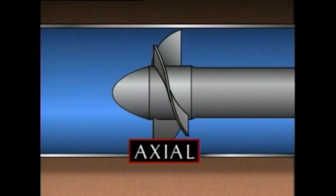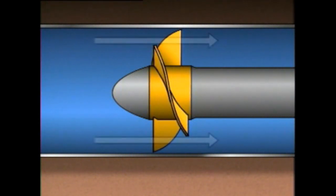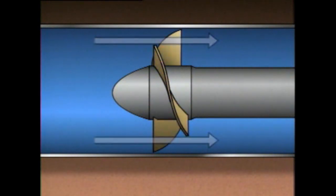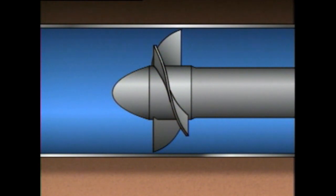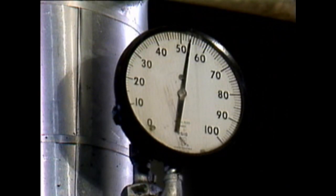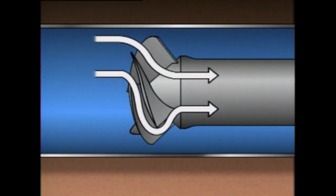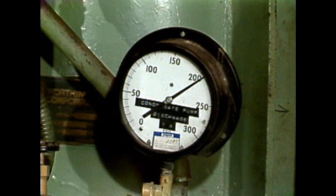In centrifugal pumps with an axial flow design, the impeller moves the liquid through the pump along a path parallel to the pump shaft. The liquid is moved mainly by the propeller action of the impeller's vanes, using only a small amount of centrifugal force. As a result, the discharge pressure of an axial flow pump tends to be lower than that of a radial flow pump; however, an axial flow pump may be able to move large quantities of liquid. Mixed flow pumps combine the characteristics of both, using centrifugal force and propeller action to develop a relatively high discharge pressure while still moving a large quantity of liquid.